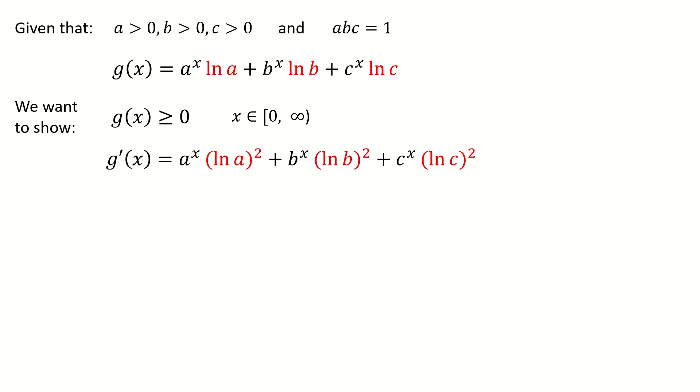Surprisingly, we have the square on each term. Since the square is non-negative and the exponential functions are positive, so all terms are non-negative, then the sum is non-negative. So we have the derivative of g(x) is non-negative. This means g(x) is an increasing function on zero to infinity. But our goal is to show g(x) is non-negative. Here we only get g(x) is an increasing function. It seems this not helps us at all.